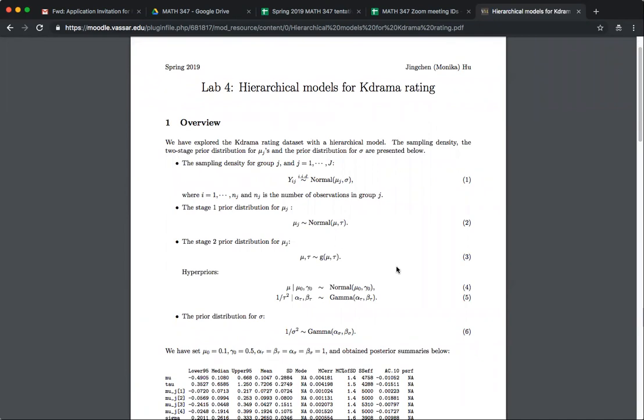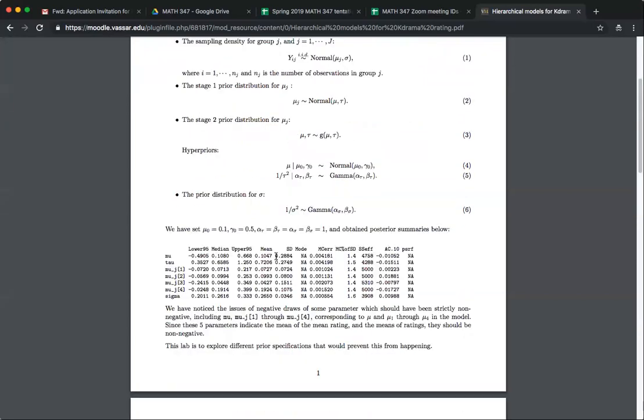So the overview part is like the model itself, the prior, the hyper prior that we gave before, and I gave you the output of what we've seen before. So these are the issues. You see, you start to get negative draws of mu and all mu_j's in fact.